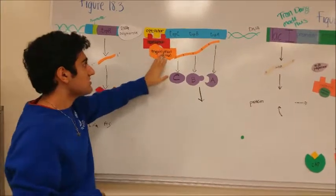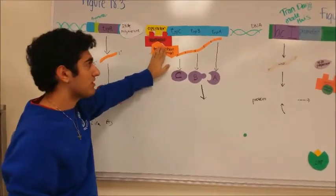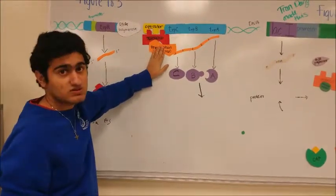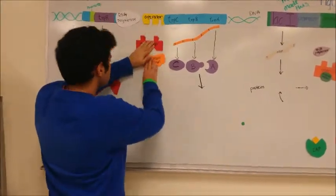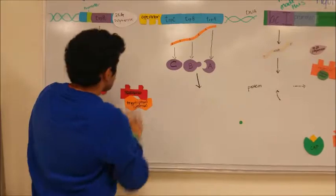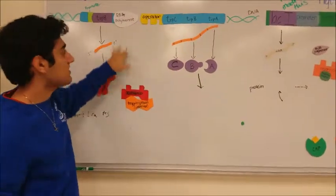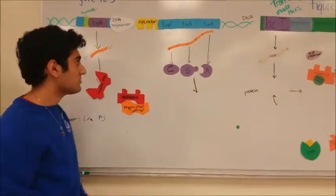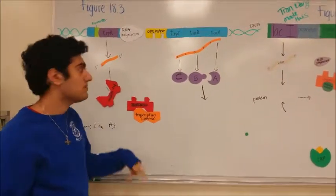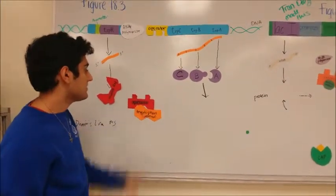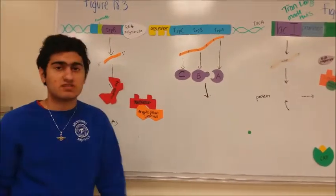However, once there are low levels of tryptophan and the body requires more, the tryptophan disassociates from the repressor, and transcription becomes on again. This tryptophan operon overall is called a repressor operon because it can be turned on and off depending on tryptophan levels. This is an example of negative regulation.